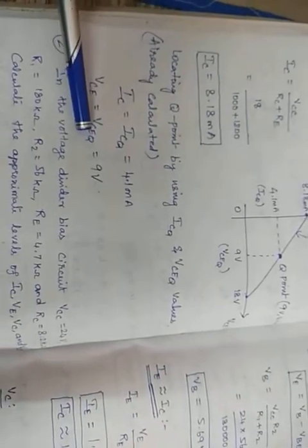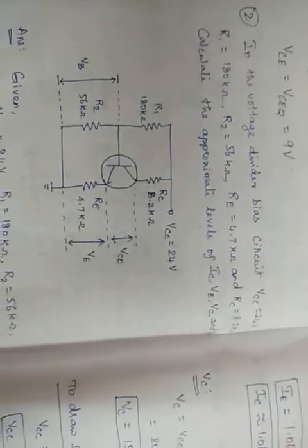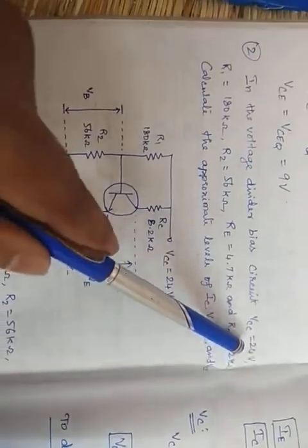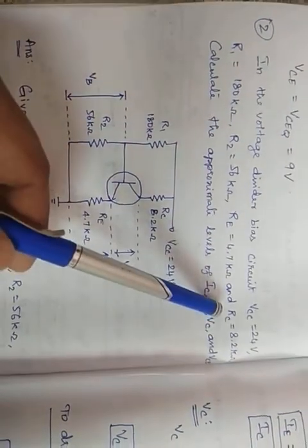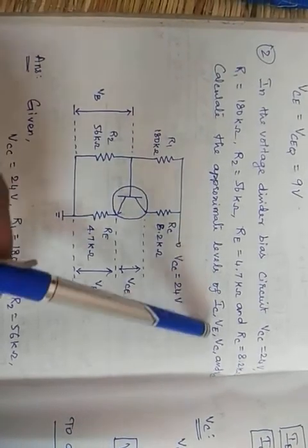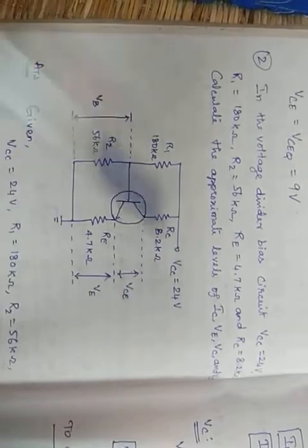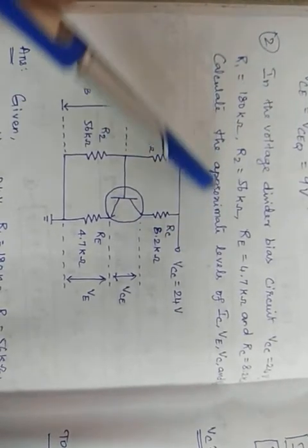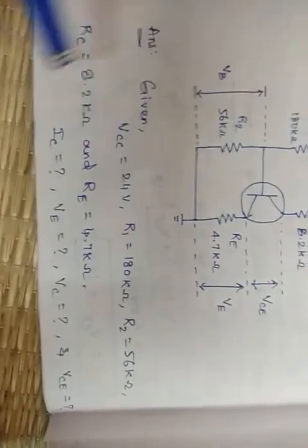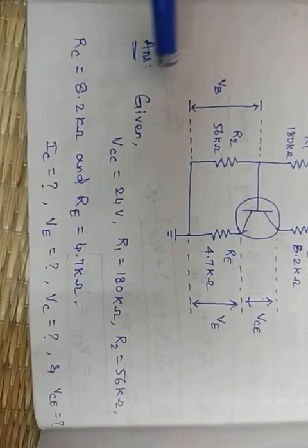Hi everyone. Yesterday we discussed this problem — today we'll see how to solve it. In the voltage divider bias circuit, VCC is 24V, R1 = 180kΩ, R2 = 56kΩ, RE = 4.7kΩ, and RC = 8.2kΩ. We need to calculate the approximate levels of IC, VE, VC, and VCE. Since approximate levels are asked, this is an approximate analysis problem.